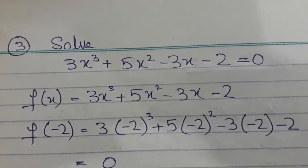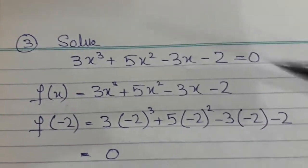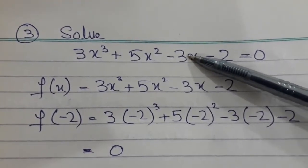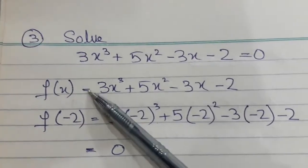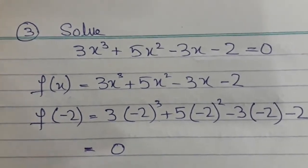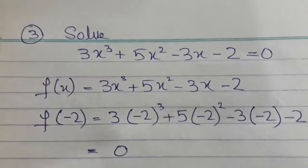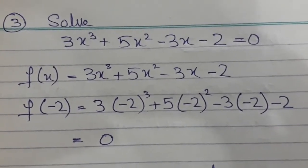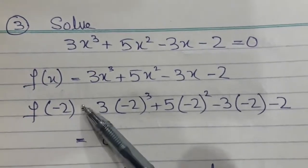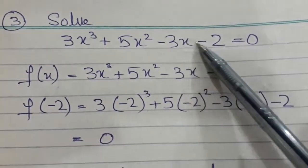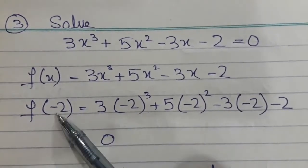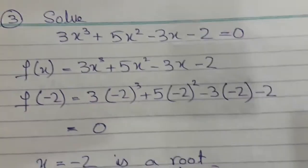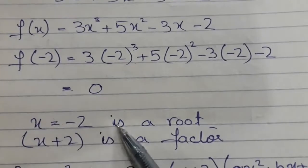Let's take another example of solving a cubic equation. For the linear factor, I use trial and error. I checked in the calculator and I'm showing the working: substituting x = minus 2 into the cubic equation gives zero remainder, so minus 2 is a root, x + 2 is a factor.